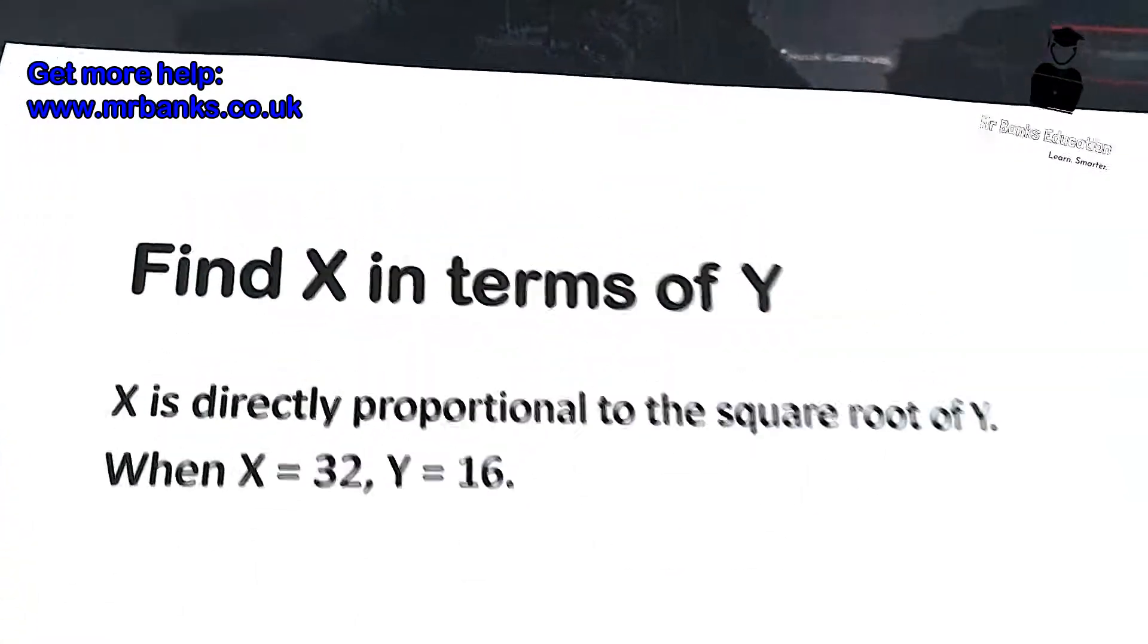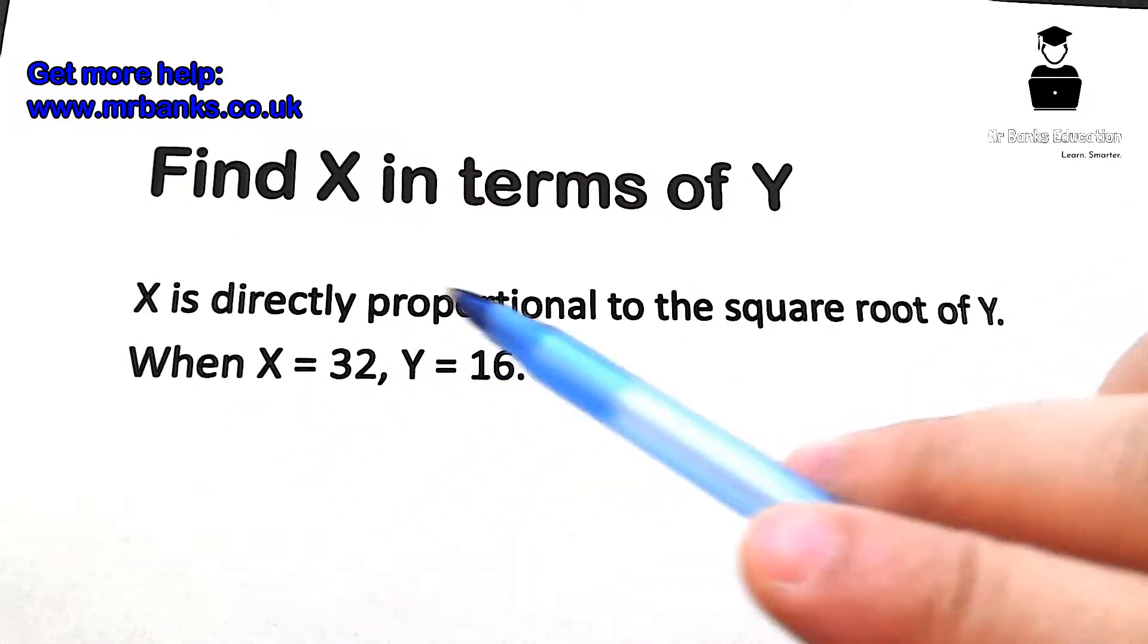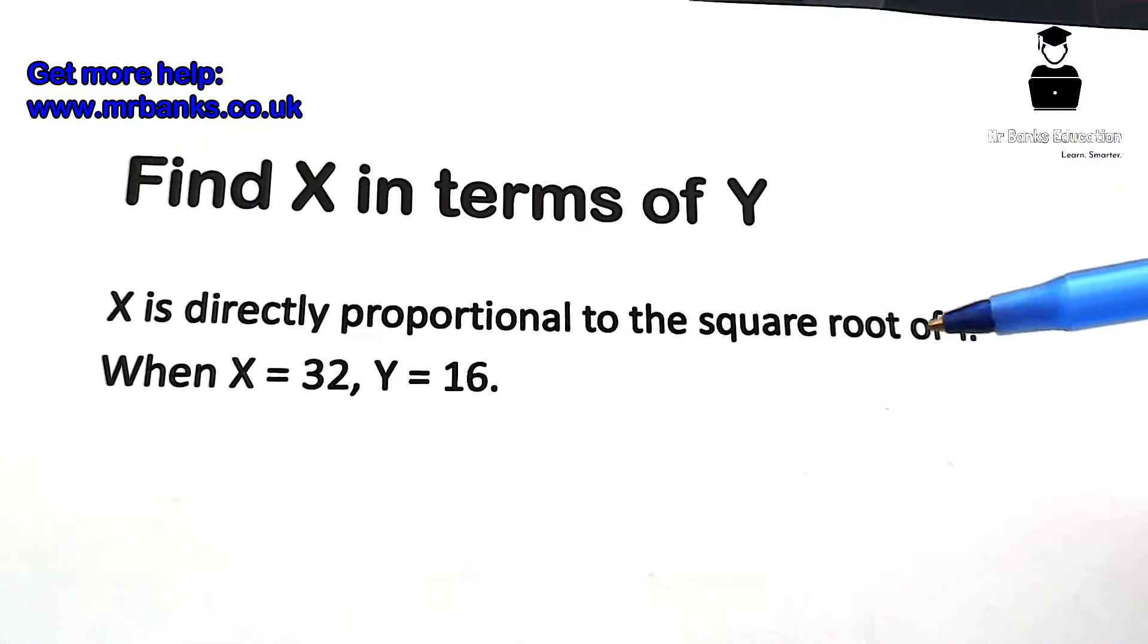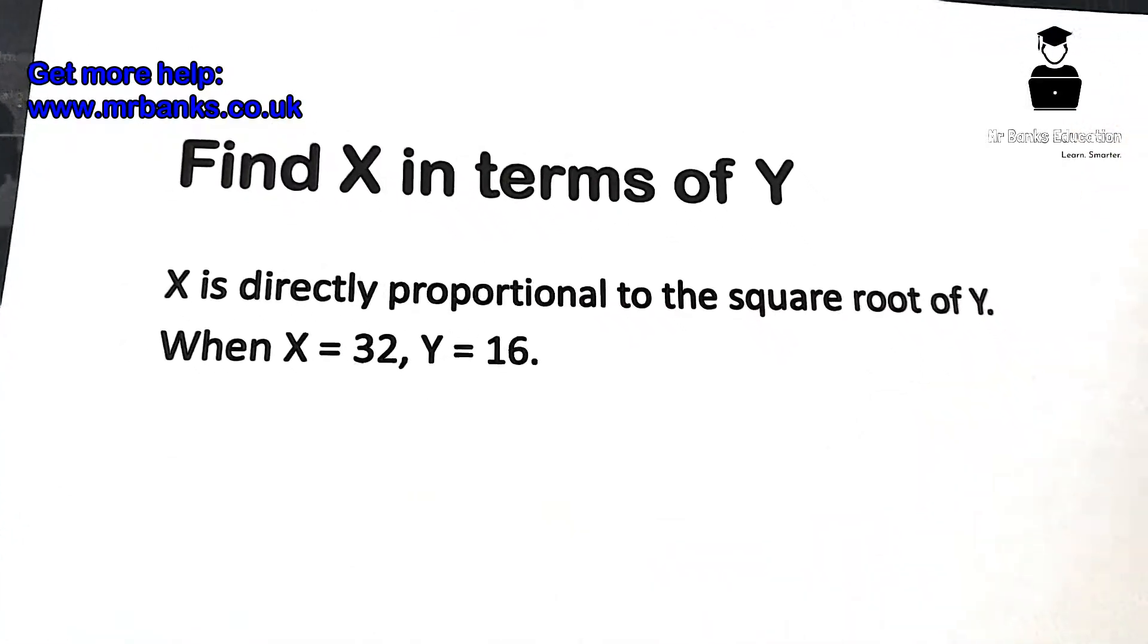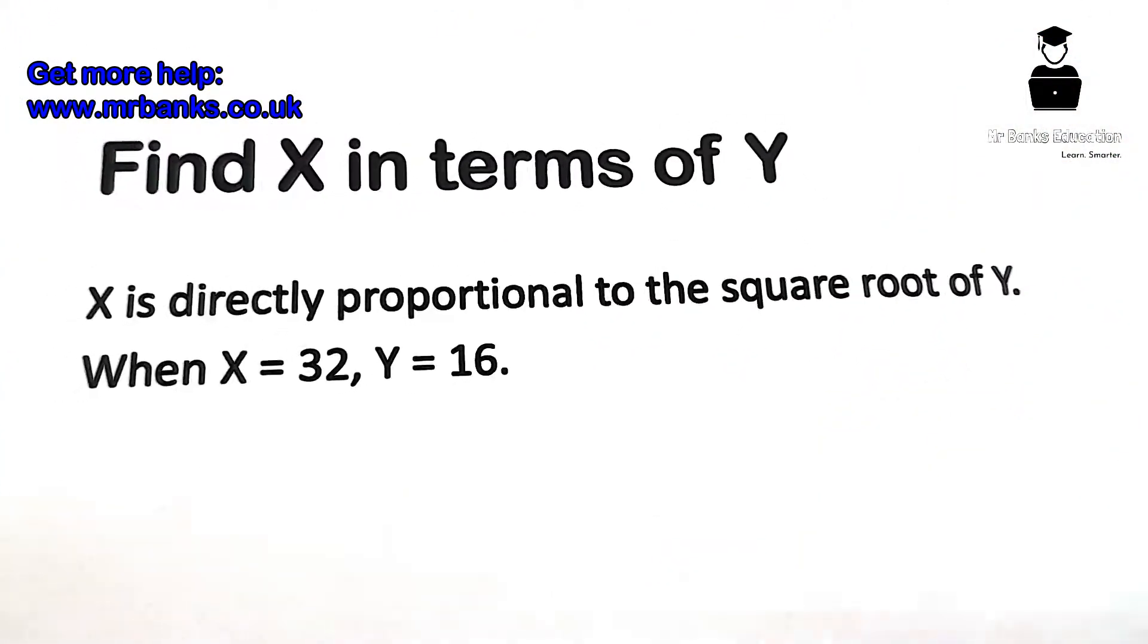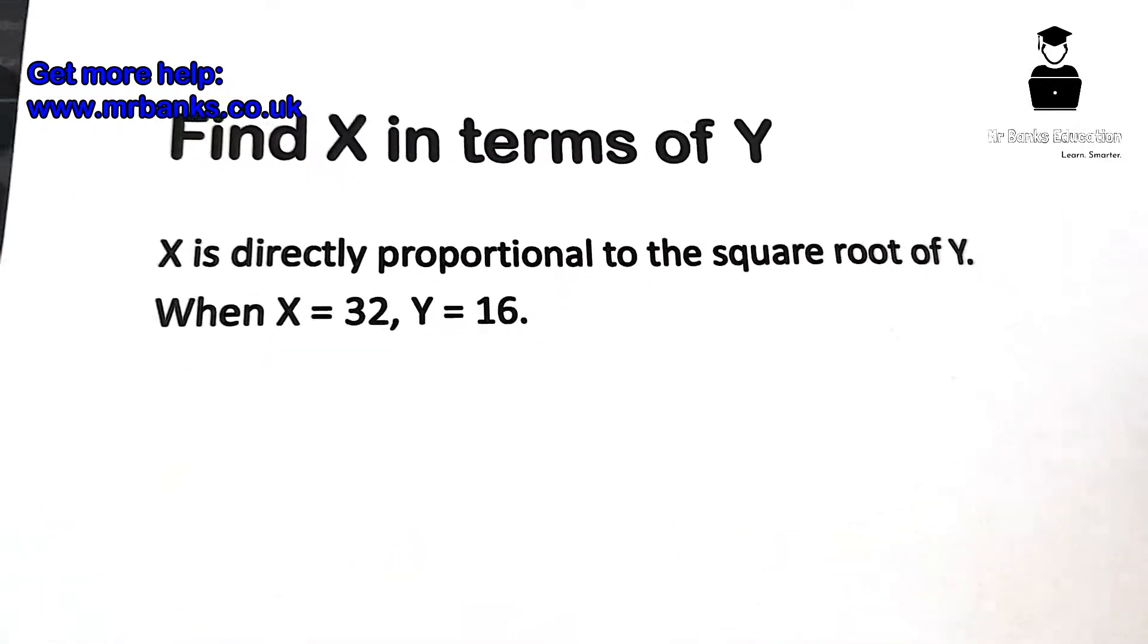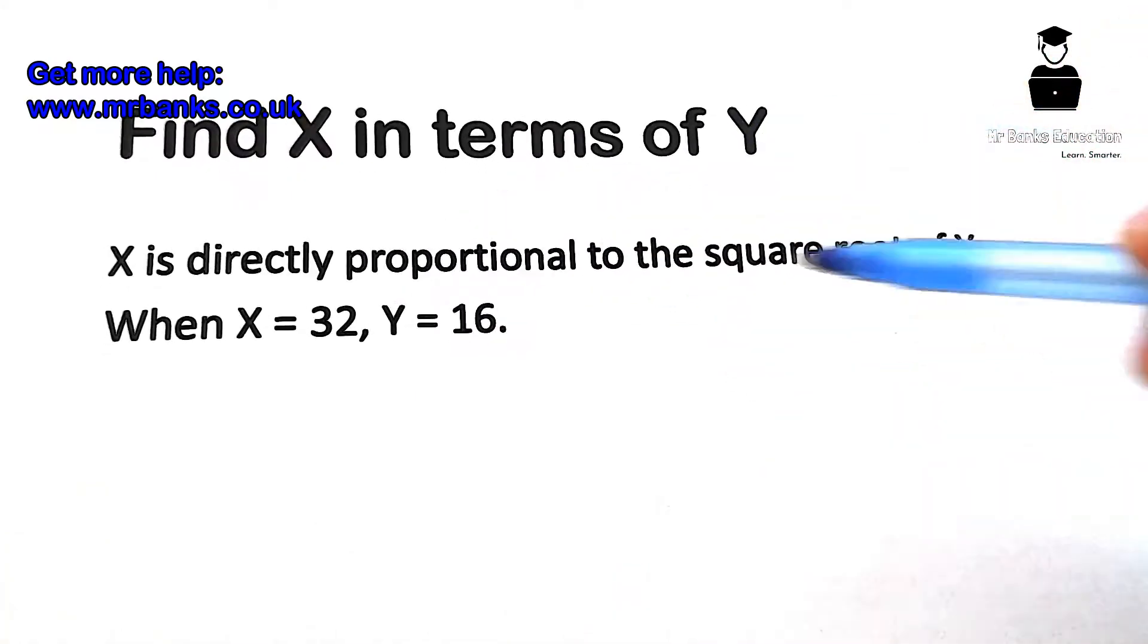We have a question here. The question is find X in terms of Y. X is directly proportional to the square root of Y. When X equals 32, Y equals 16. There's quite a simple way to do these sorts of questions. First of all, a lot of it comes down to how you write all this information down.